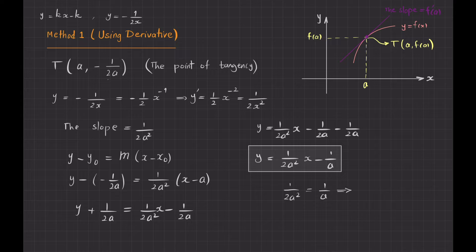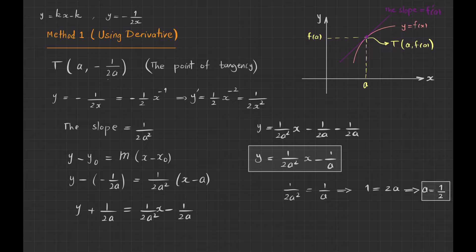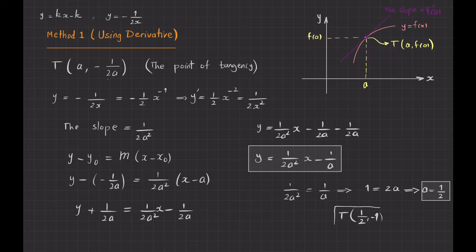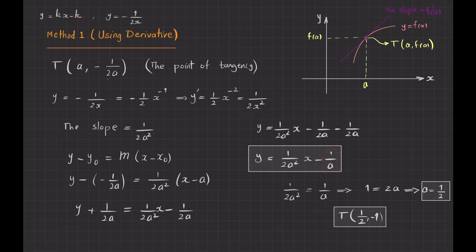Comparing coefficients: 1 over 2a squared must equal 1 over a. Multiplying everything by 2a squared, the left side becomes 1 and the right side becomes 2a, so a equals 1 half. With a equal to 1 half, the coordinates of the point of tangency are (1/2, -1), since plugging 1/2 into minus 1 over 2a gives minus 1. And since k equals 1 over a, we get k equals 2.